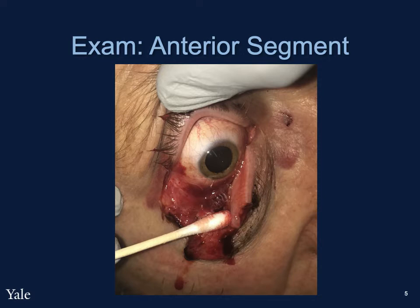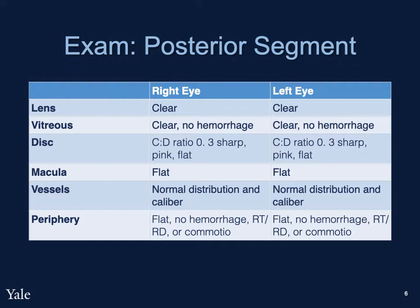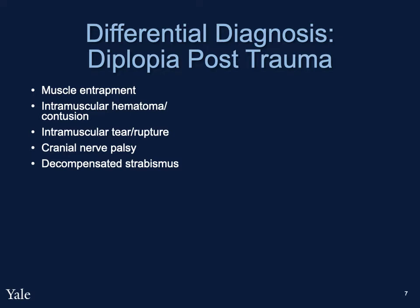Posterior segment exam of both the right and left eye were unremarkable. The differential diagnosis for diplopia after trauma includes muscle entrapment, intramuscular hematoma or contusion, intramuscular tear or rupture, cranial nerve palsy, or decompensated strabismus.